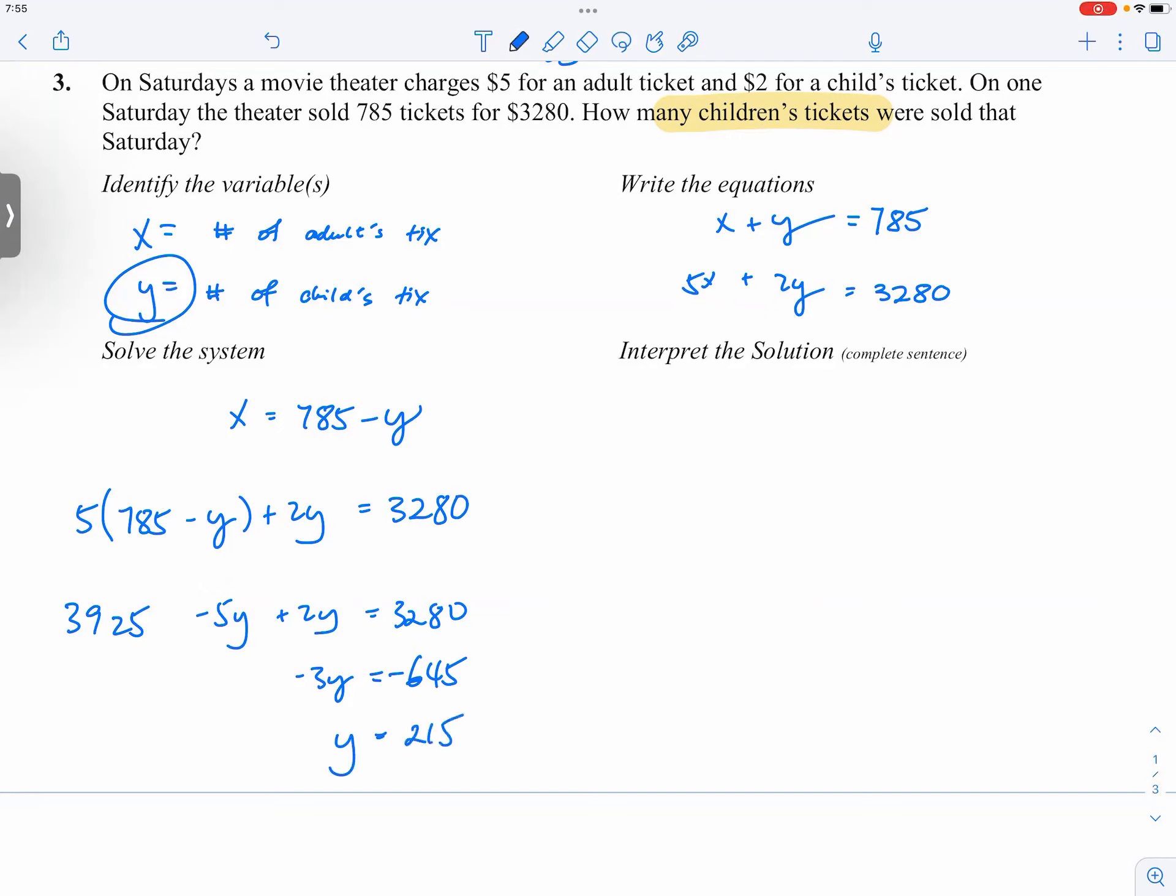So y = 215. 215 children's tickets were sold that Saturday.